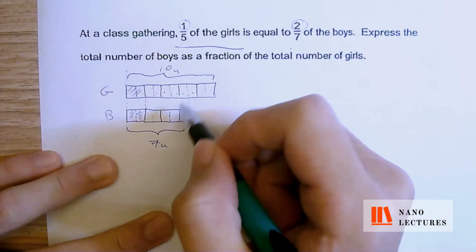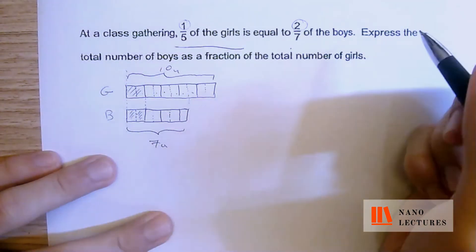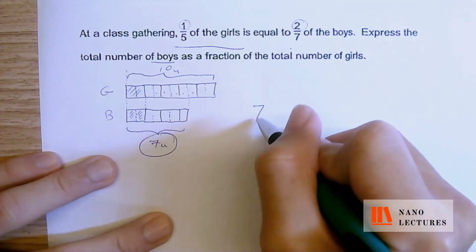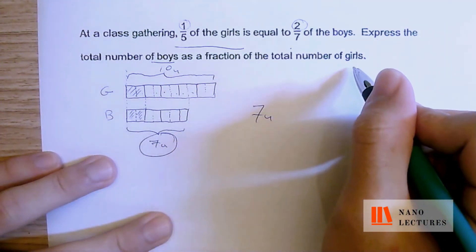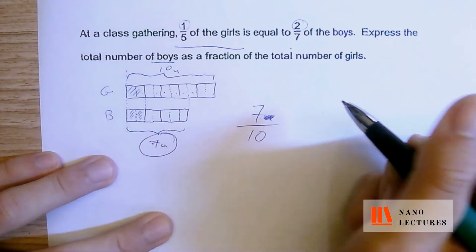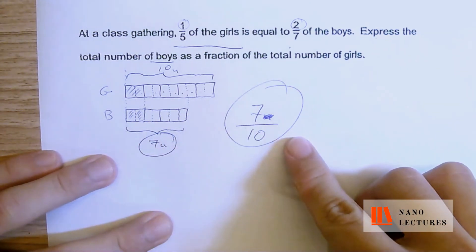There's no other information to input inside. Now, from here, they say express the total number of boys, which is seven units, as a fraction of the total number of girls, which is ten units. So you don't need to write the U. Can you simplify this any further? No, you can't.